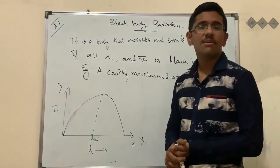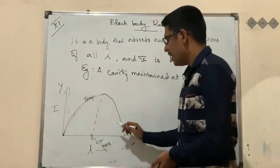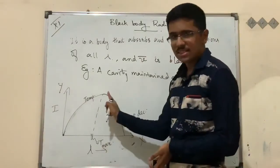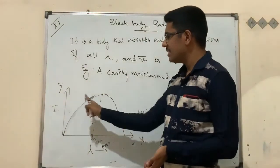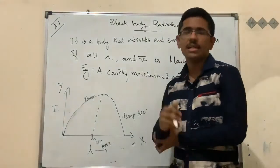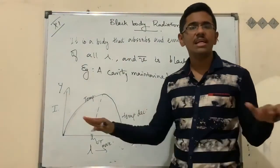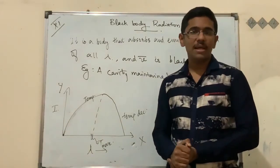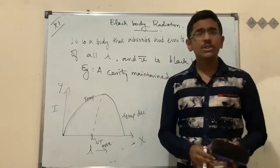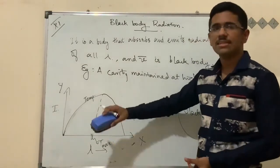The curve represents temperature: at a particular wavelength, temperature is maximum, then it decreases. In the first half of the graph, increasing intensity increases temperature, but in the second half, temperature decreases even as intensity increases. This shows there is no direct relation between intensity and temperature — that is the main concept of black body radiation. Two famous laws — Stefan's law and Wien's law — will be discussed next.